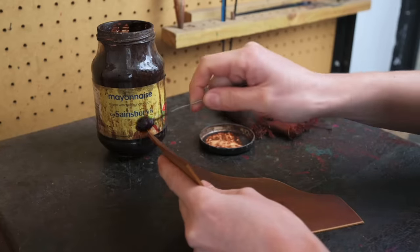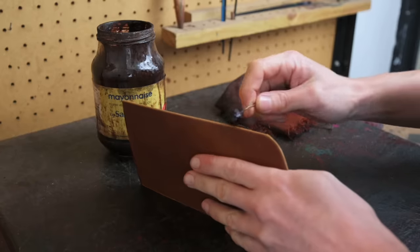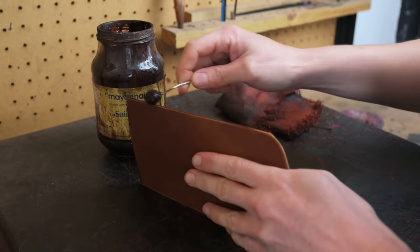And then once you've done your edging you can then stain and polish the edges of your card wrap.